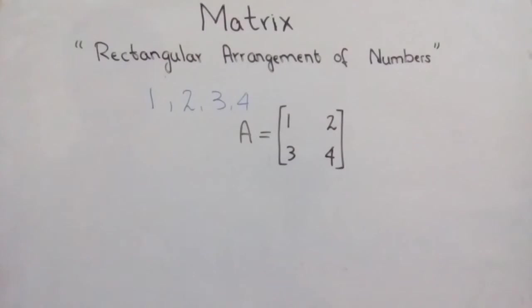So matrix A is equal to these elements. These 1, 2, 3, and 4 are the elements of matrix A.